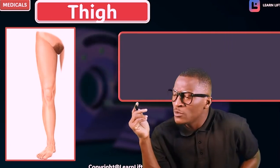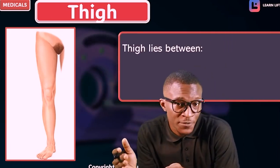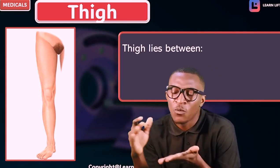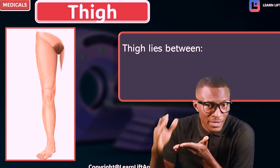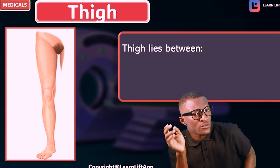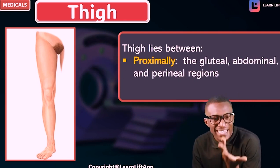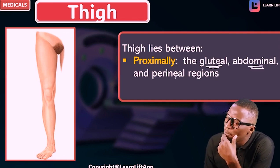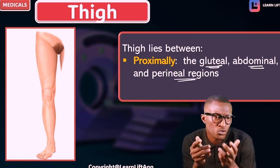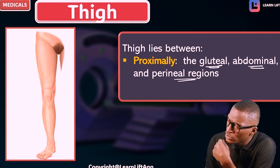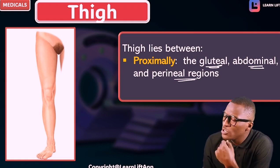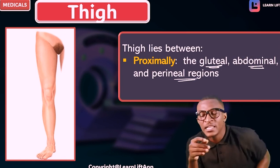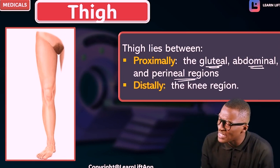Now take note that the thigh has boundaries. The thigh is demarcated proximally and distally. What is the proximal demarcation of the thigh? Proximally, the thigh is bounded by the gluteal region, the abdominal region, and the perineal region. We're going to talk about that. Proximally we are talking about above the thigh.